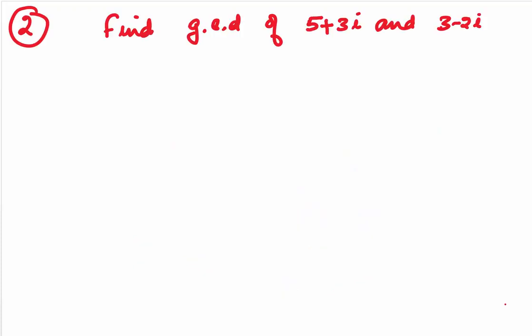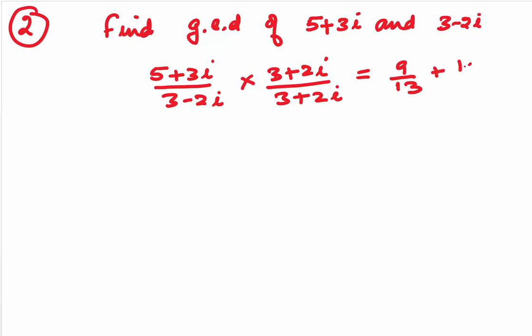Let us do one more question. Here, we are asked to find the GCD of 5 plus 3i and 3 minus 2i. So, we will first divide 5 plus 3i by 3 minus 2i. Rationalize this. We would be getting 9 by 13 plus 19 by 13i.